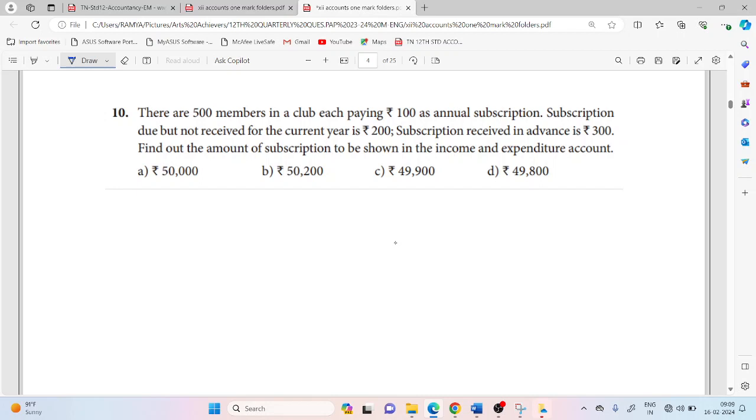Now, we need to find the amount of subscription to be shown in the income and expenditure account. What do you do first? There are members, total members. Total members in the club are 500.